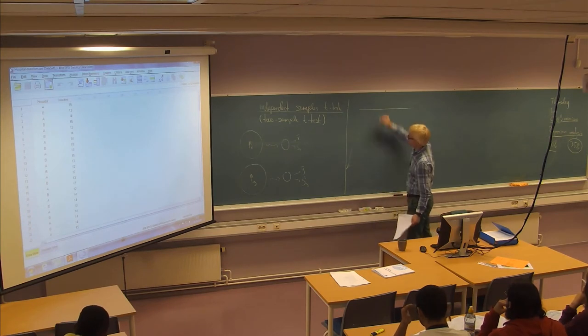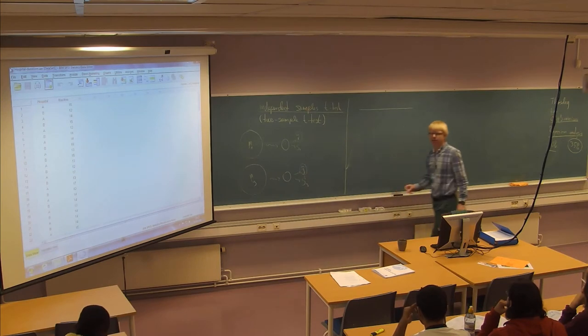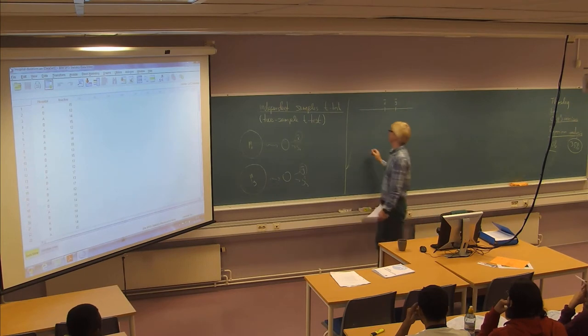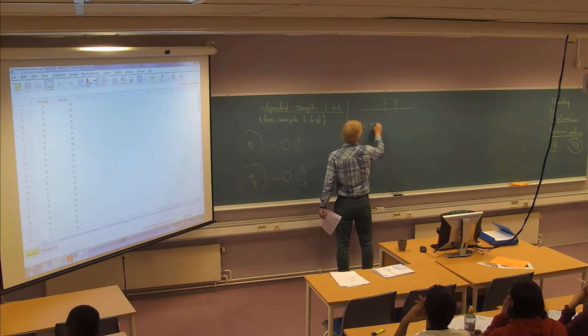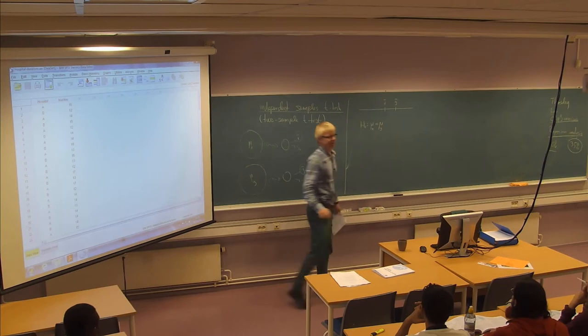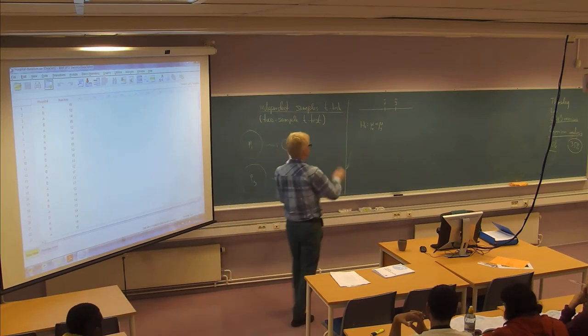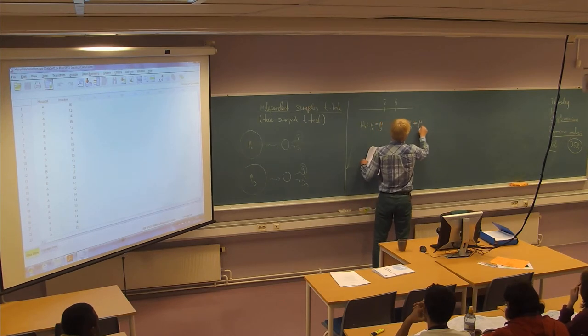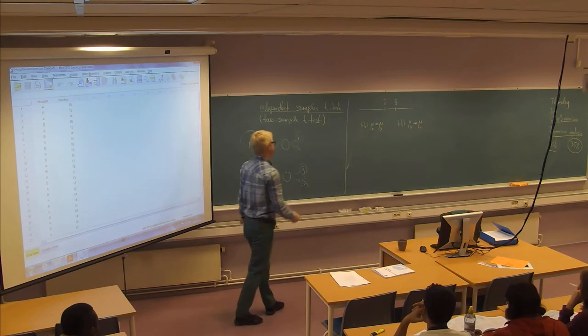And of course we observe and compare basically those sample averages. Typically the null hypothesis would state that those two means are equal, while the alternative could be one-sided or two-sided. A two-sided alternative just looks for evidence for a difference between the means based on sample data.